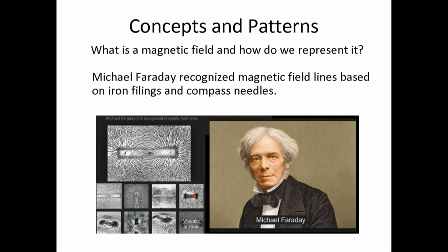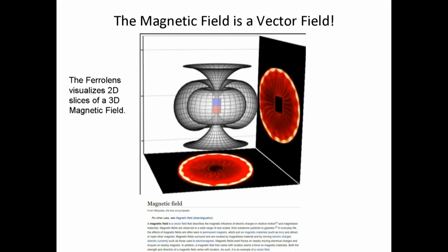What's a magnetic field and how do we represent it? Historically, Michael Faraday recognized magnetic field lines based on his observations of iron filings and compass needles. But we know a magnetic field is in 3D vector space. And what the ferrolens does is it basically takes a slice of that 3D vector space and shows us in 2D at any angle ISO lines showing us that field.